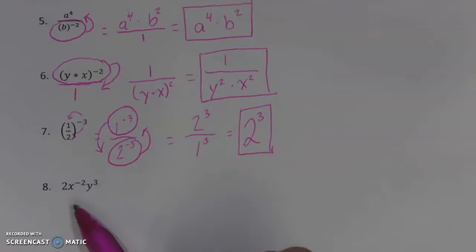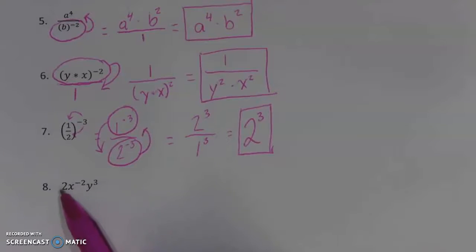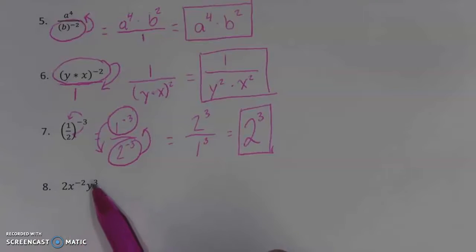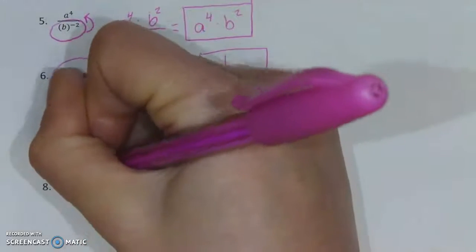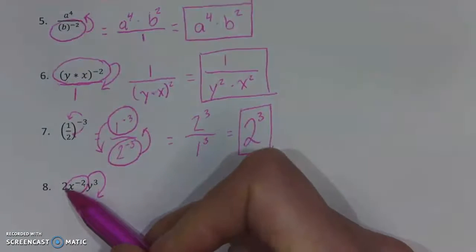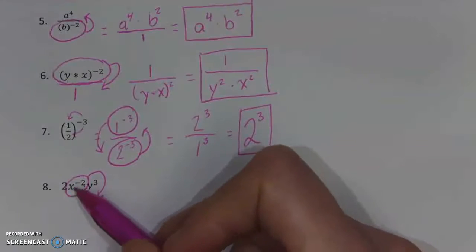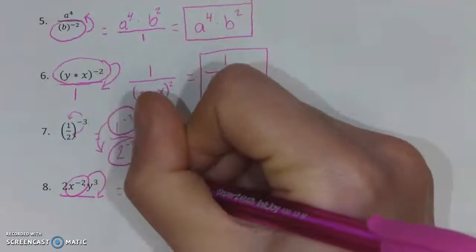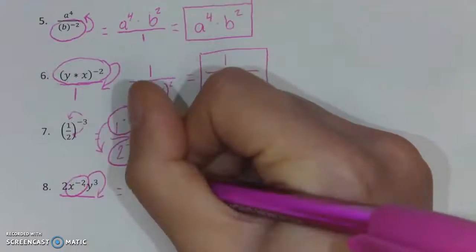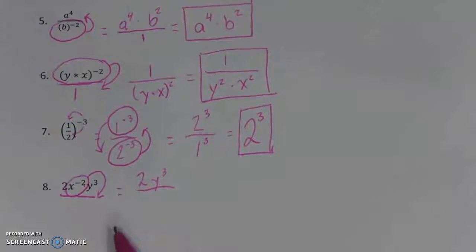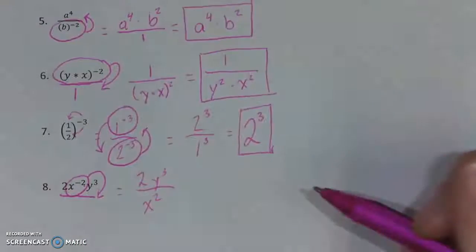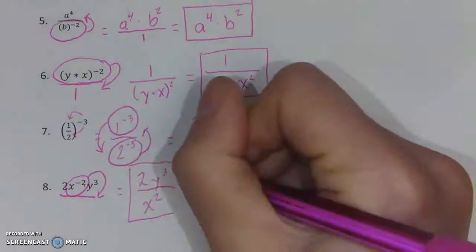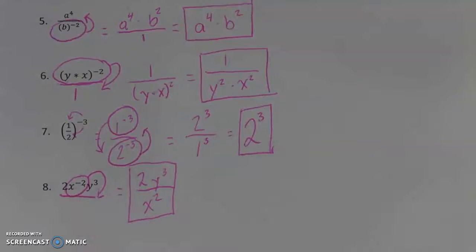Watch what you can and cannot move. Here we have three parts: a two, an X to the negative second, and a Y to the third. Each functions as its own independent number. The only number that is moving is X to the negative two. Notice that this negative two does not apply to the two — those are talking about different things. This negative two is only talking about the X, so only the X will move. That means the numerator will have two times Y to the third, and the two stays in place. X to the negative second moves to the bottom, becoming X to the second. At this point we would have simplified as much as we could — you are only moving the exponent with its base.